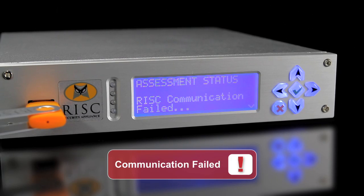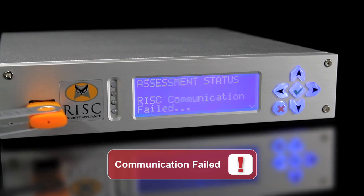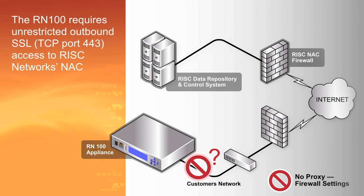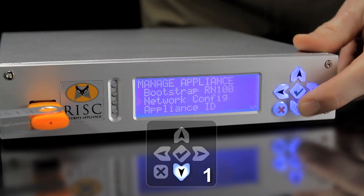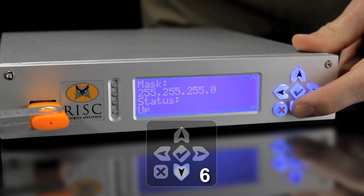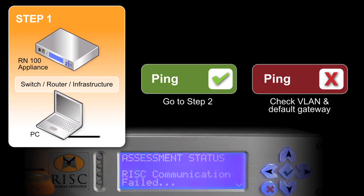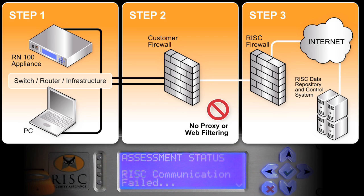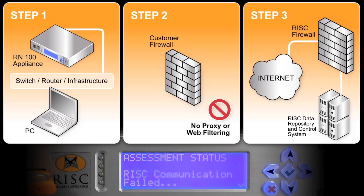Issue number 1: Bootstrapped RN100 displays the message 'Risk Communication Failed.' Determine the IP address of the appliance and try to ping the RN100 from another node. If you cannot ping it, confirm the network connection and confirm that the switch port is configured correctly for VLAN. Verify that the RN100 has a valid default gateway and verify the DNS server. If the RN100 is on the network and ICMP reachable, verify that you have proper internet access using another computer.